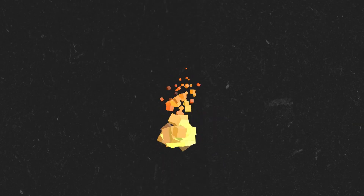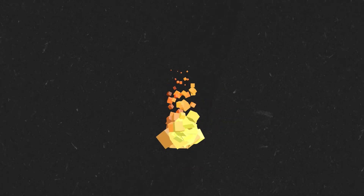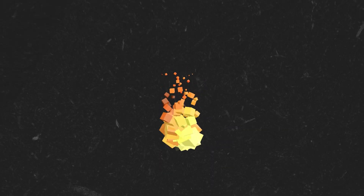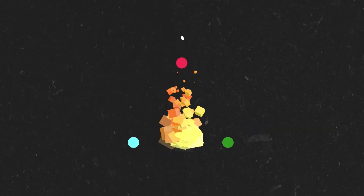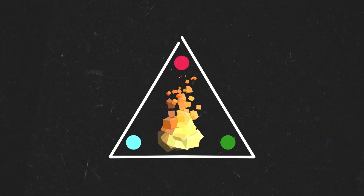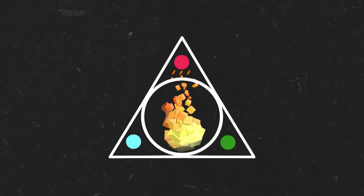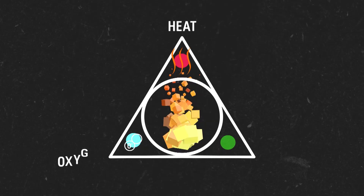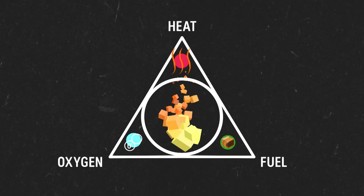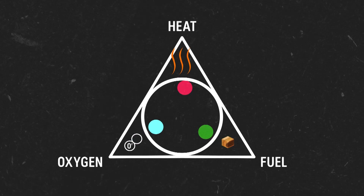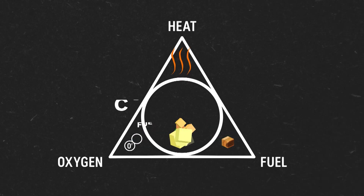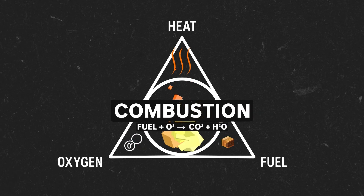Perhaps a good place to start is to understand what fire is. To exist, this wavy hot thing actually relies on three ingredients: heat, oxygen, and fuel. And when these three things combine, it causes a special chemical reaction called combustion.